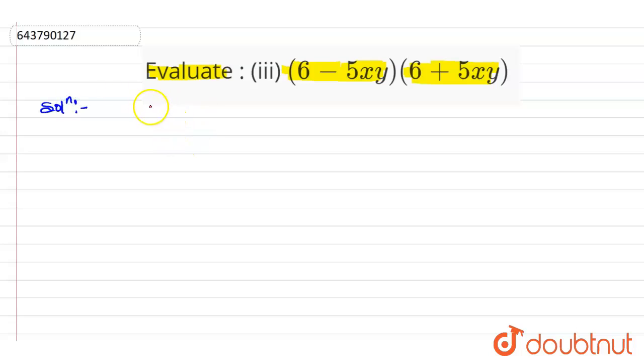The given expression is 6 minus 5xy into 6 plus 5xy. Since we all know the identity a minus b into a plus b.